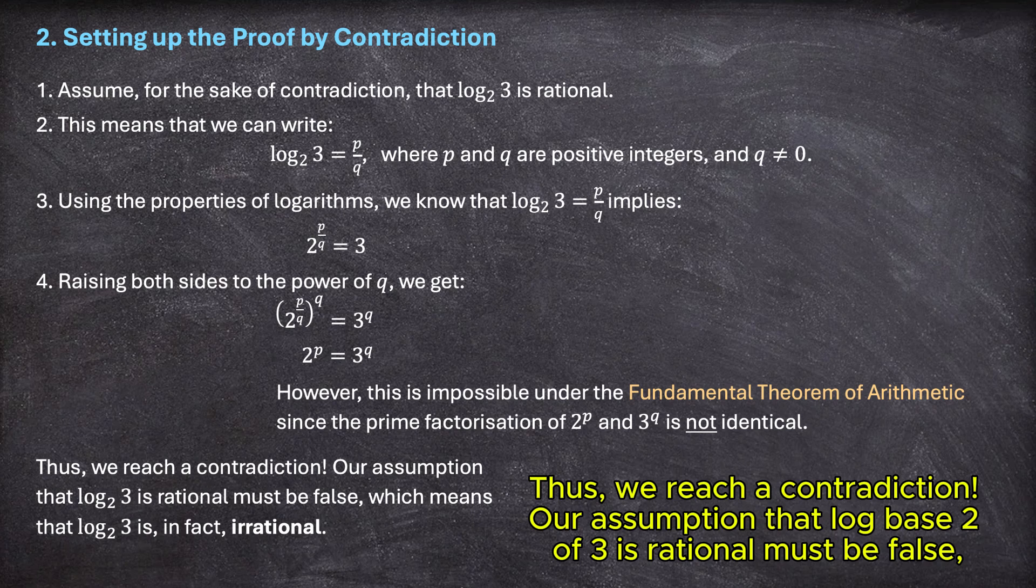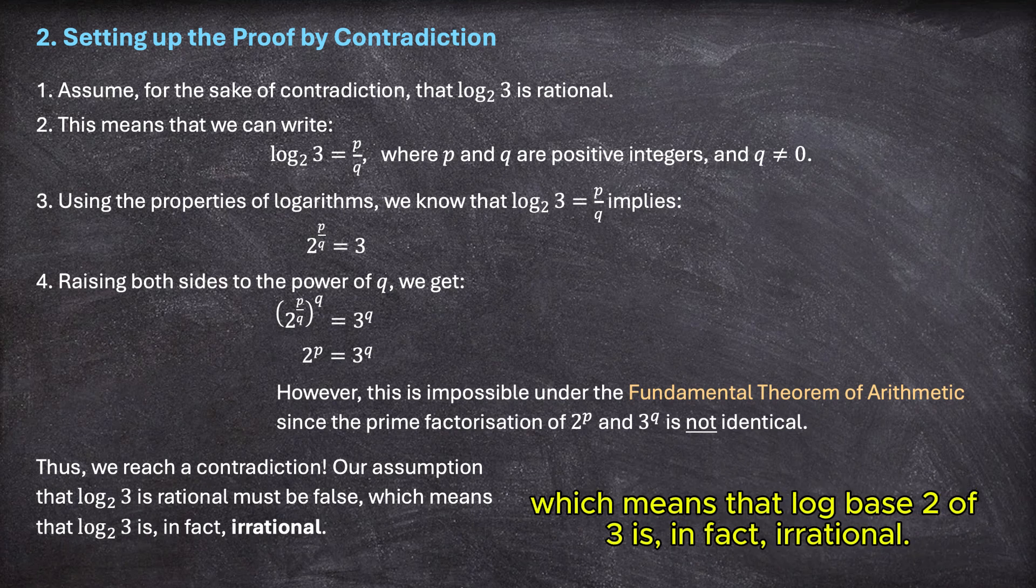Our assumption that log base 2 of 3 is rational must be false, which means that log base 2 of 3 is, in fact, irrational.